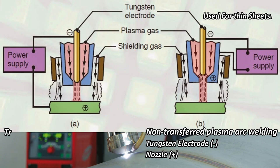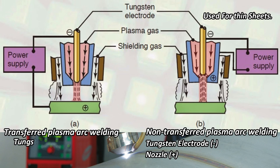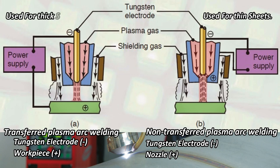The second type is transferred plasma arc welding. This process also uses straight polarity DC current. In this process, the tungsten electrode is connected to the negative terminal and the workpiece is connected to the positive terminal. The arc is produced between the tungsten electrode and the workpiece. Both plasma and arc are transferred to the workpiece, which increases the heating capacity of the process. It is used to weld thick sheets.